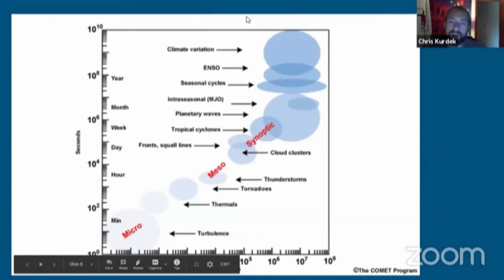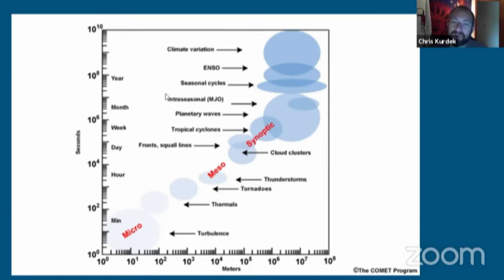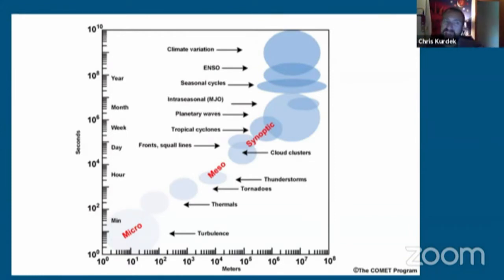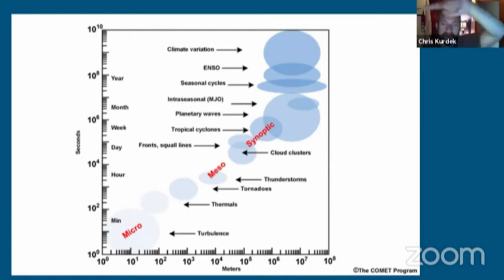At the top of the scale diagram is the planetary level — climate variations, El Niño, teleconnections related to ocean temperatures, interseasonal variations, and planetary waves like the jet stream. The jet stream is a ribbon of fast-moving air at upper levels in the atmosphere that circles the top of the planet — hence it's planetary or hemispheric scale. We have a northern and southern jet stream; this time of year we mostly refer to the northern one simply as 'the jet stream.'